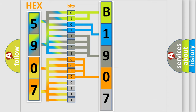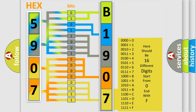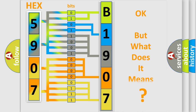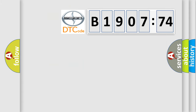A single byte conceals 256 possible combinations. We now know in what way the diagnostic tool translates the received information into a more comprehensible format. The number itself does not make sense to us if we cannot assign information about what it actually expresses. So, what does the Diagnostic Trouble Code B190774 interpret specifically for SCION car manufacturers?